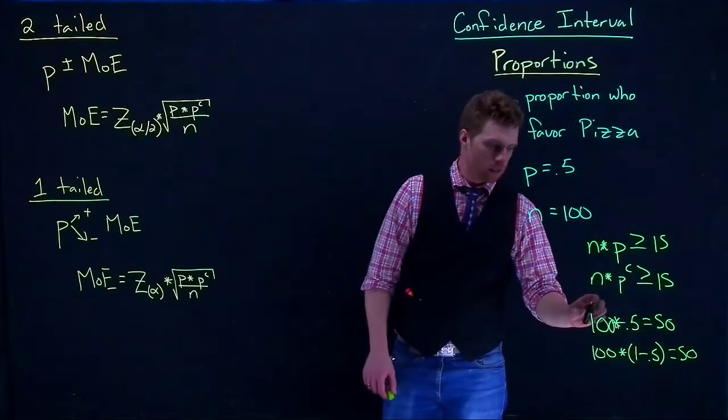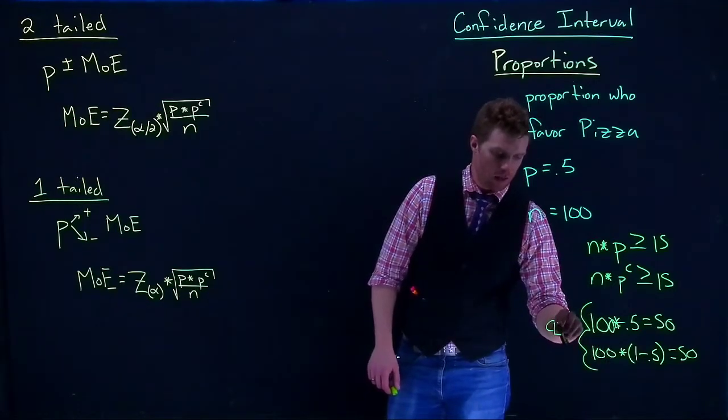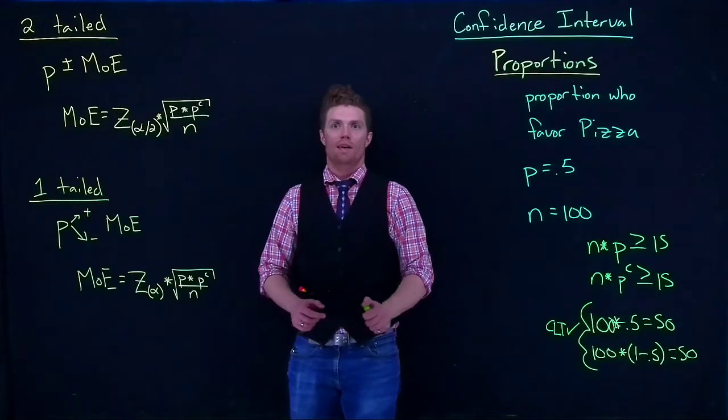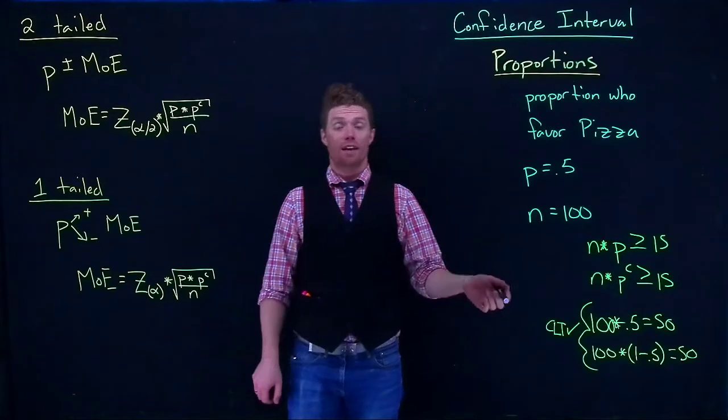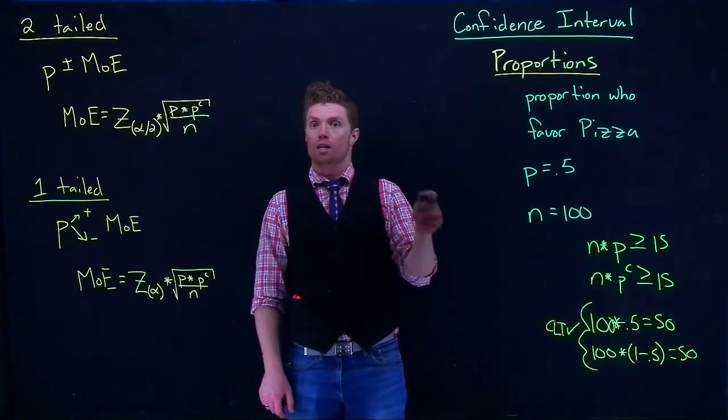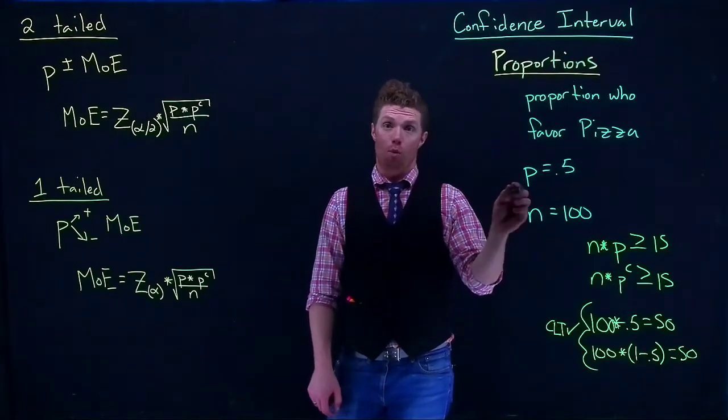100 times 0.5 is equal to 50, and 100 times 1 minus 0.5 is also equal to 50. So for central limit theorem we can say CLT check. Because we have enough successes and enough failures, by the central limit theorem this is going to be approximately normal, the distribution of our sample proportions.